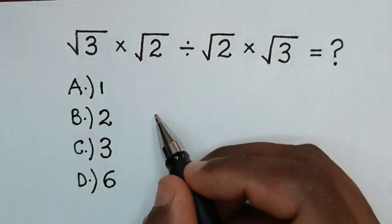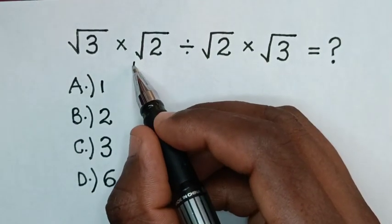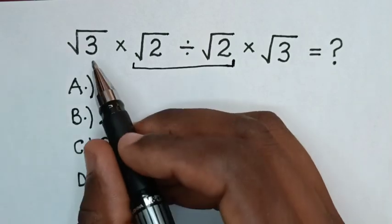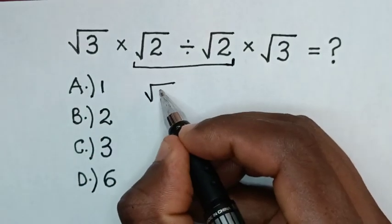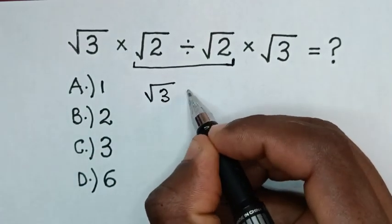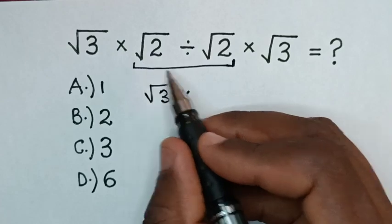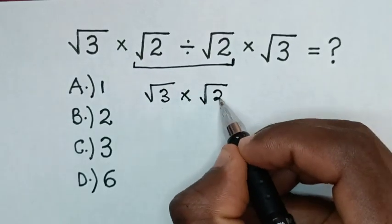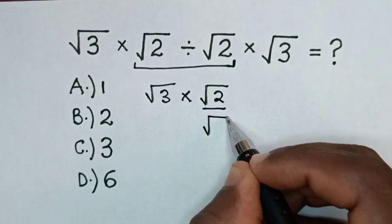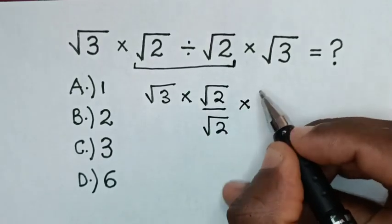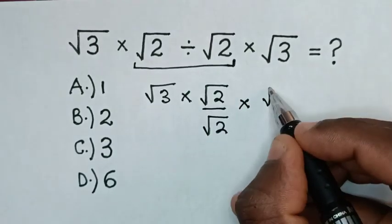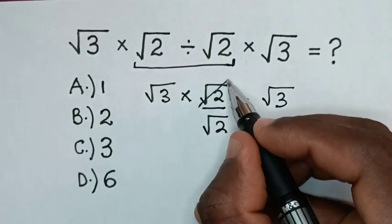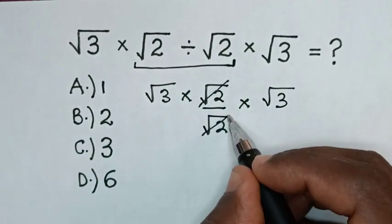So first we will start to deal with division. Square root of 2 divided by square root of 2. Then it will be square root of 3 times — this divided by this — is the same as square root of 2 over square root of 2, then times square root of 3. To simplify, this and this will cancel each other.